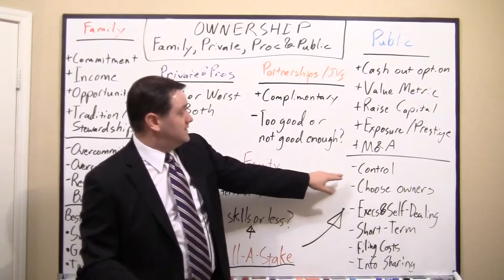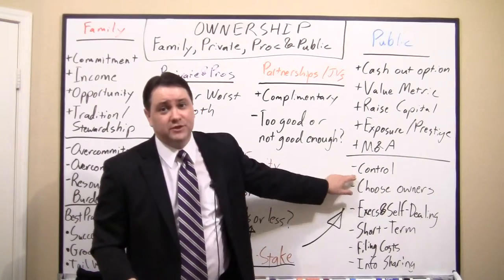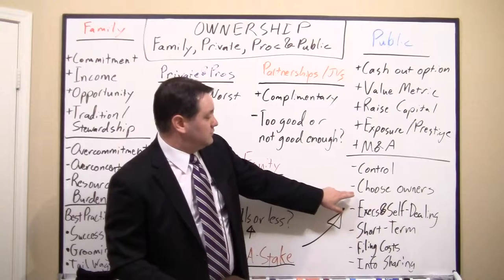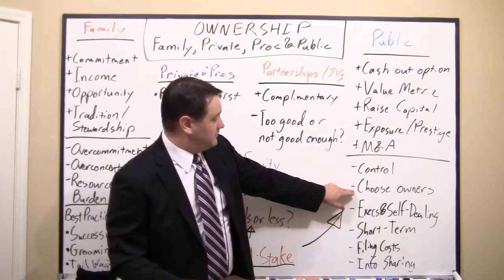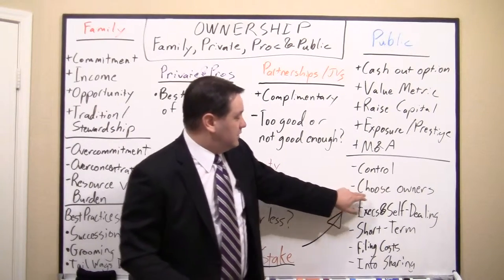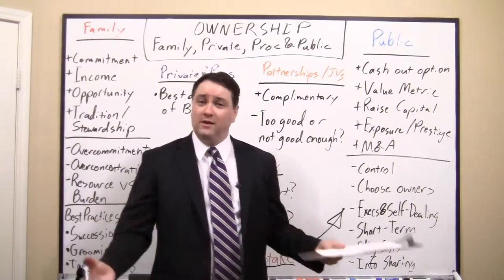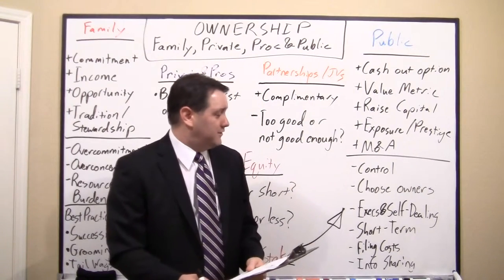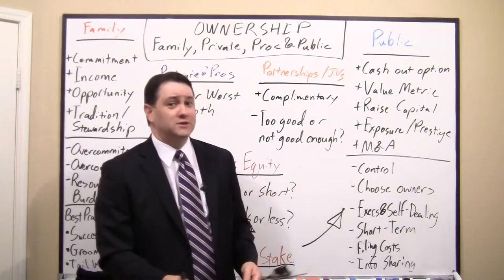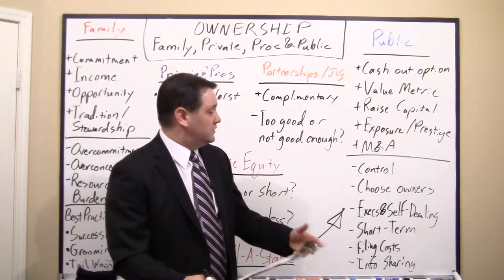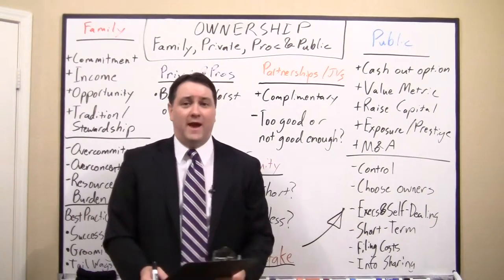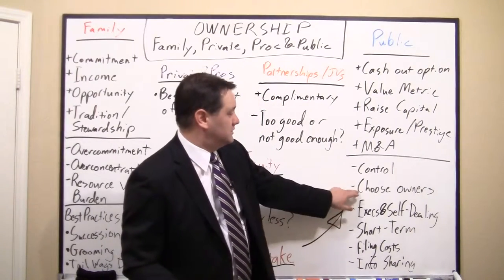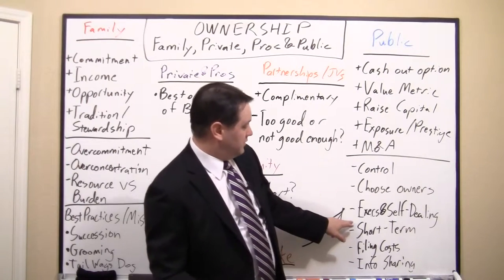Now let's talk about some of the disadvantages of public ownership. Obviously the big one is you have to give up a certain measure of control — I'll talk about how to mitigate that, but that's one thing the family faces. Secondly, you don't get to choose your owners anymore. Once it's on a public market, it can be bought by anybody. The thundering herd out there can have their own opinions about how the business should be run, they might be difficult to manage relationships with. You might also get activist investors, hedge funds, people who want to force change in the business buying up large shares of the stock. So you lose the ability to choose your owners when you go public.